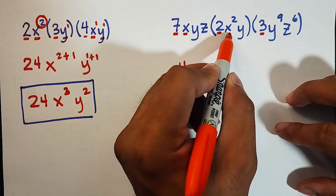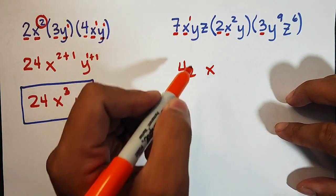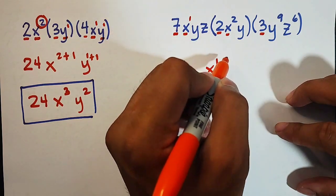For the variable x, we will copy the variable x. We have x raised to the invisible 1. 1 plus we have 2.